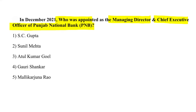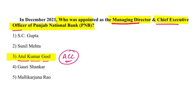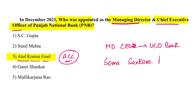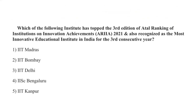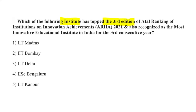Atul Kumar Goel was appointed as the Managing Director and Chief Executive Officer of Punjab National Bank. This appointment was approved by the Appointments Committee of the Cabinet. For UCO Bank, remember that Soma Sankara Prasad has been appointed as its MD and CEO.